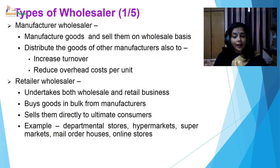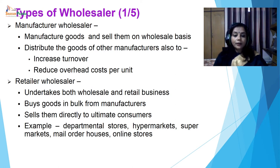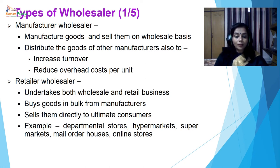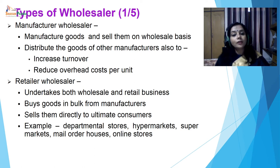Types of wholesalers. The first is manufacturer wholesaler — they undertake wholesaling and are also engaged in manufacturing of the goods. They sell goods manufactured by themselves on a wholesale basis, and may also distribute goods of other manufacturers to increase turnover and reduce overhead costs per unit. So basically, they are producing the goods and wholesaling, and in that process they may keep the products of other manufacturers also.